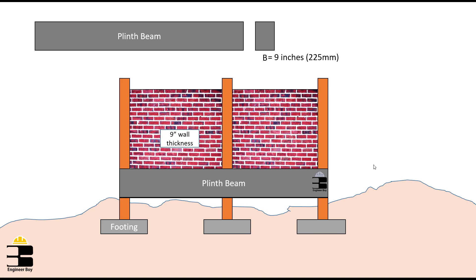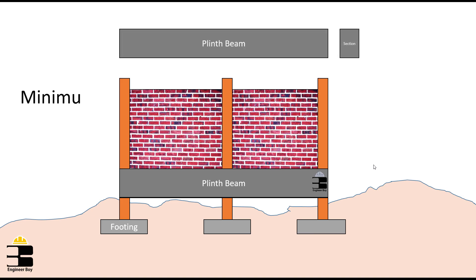Based on thumb rules, the minimum width of the beam must equal the width of the wall and depth in inches must equal the length of beam in feet.